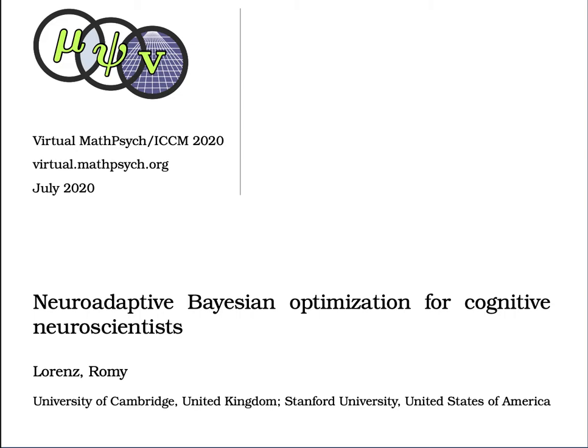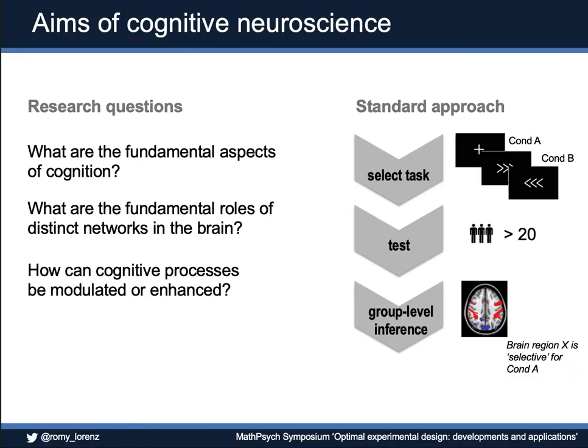Hi, my name is Romy Lawrence. I'm talking today about neuroadaptive Bayesian optimization for cognitive neuroscientists. So let's jump straight in.